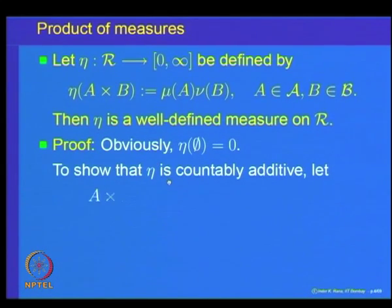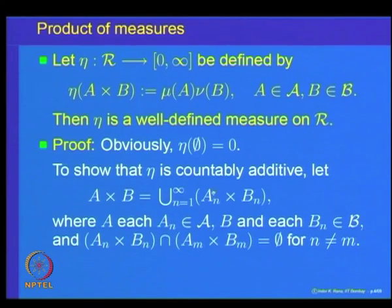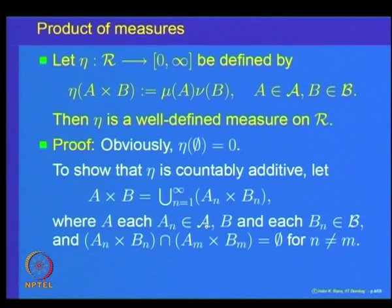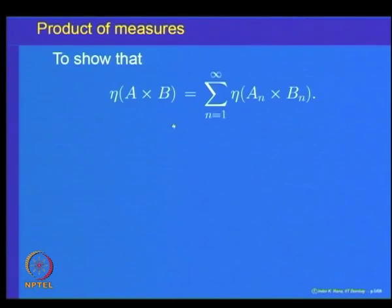To show countable additivity, let us take a rectangle A×B and suppose it can be represented as a countable pairwise disjoint union of rectangles Aₙ×Bₙ, where each Aₙ is in sigma algebra A and each Bₙ is in sigma algebra B. We want to show that η(A×B) = Σₙ η(Aₙ×Bₙ).